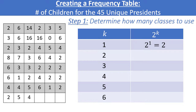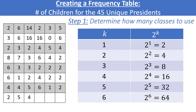2 to the second power is 4, still not larger than 45. Continuing, we get 8, 16, 32, and finally 2 to the sixth power, which is 2 multiplied by itself 6 times, equals 64. This is the first time that 2 to the k is greater than our sample size of 45. This tells us that 6 is an appropriate number of classes for our frequency table and histogram, so that's what we will use.